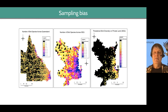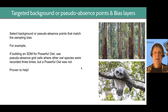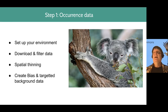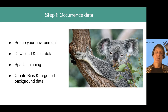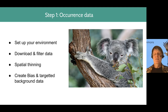We're actually knocking out data using this technique. And then you can also create a bias layer and sample from that bias layer, or use targeted background data. Those two things do similar kinds of things in terms of how they deal with bias in the data.